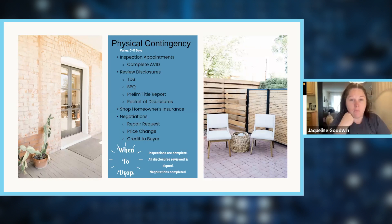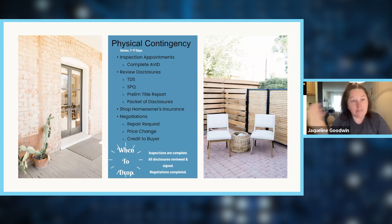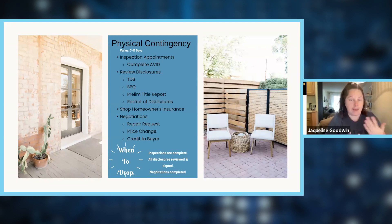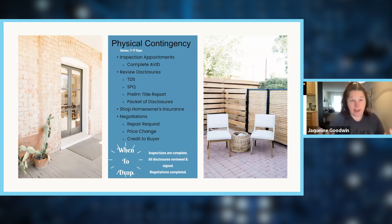At this point your buyers should also be shopping for homeowner's insurance — similar to shopping for car insurance, compare rates from several companies. Towards the end of your inspection and physical contingency period — normally somewhere between seven and seventeen days, with seventeen being standard — once you have all inspection reports back and have reviewed all seller disclosures, it's time for negotiations. Options are: the buyers are content and drop the contingency, or they submit a repair request, request a price change, or request a credit to the buyer.